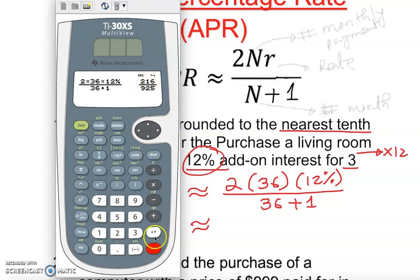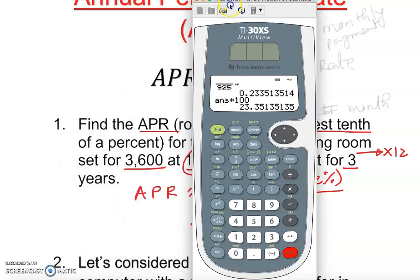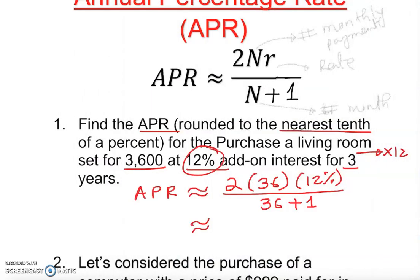I can enter N over D: 2 times 36 times 12%, going down to 36 plus 1, enter. You'll get some fraction. We want a decimal, so you'll see this gives you 0.23. We'll go three decimal places, then multiply by 100 to get 23.4%.